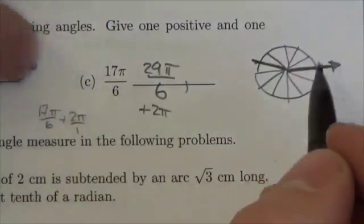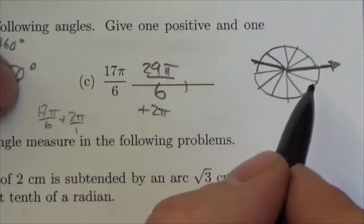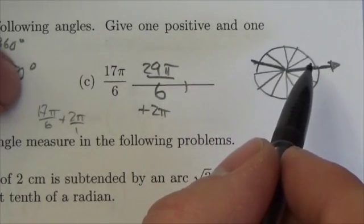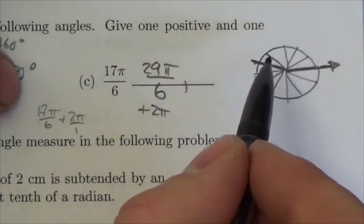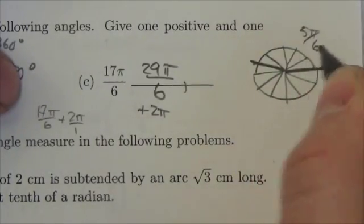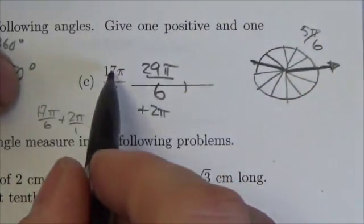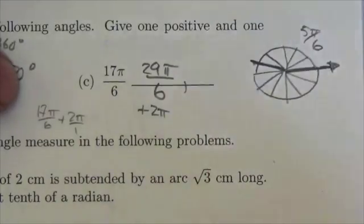If I want to go backwards, here's my coterminal angle. By the way, another positive coterminal angle would have been 1, 2, 3, 4, 5. 5π over 6 is also coterminal to that. In fact, it's the smallest one. It would be the principal angle.